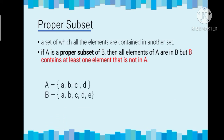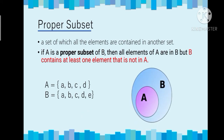For example, A has elements {a, b, c, d} and B has elements {a, b, c, d, e}. In the Venn diagram, you will see that the elements of A — {a, b, c, d} — are also part of B, but there is one element that is not part of A, which is e. So we can say that A is a proper subset of B.